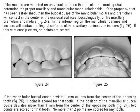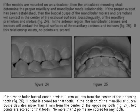If the mandibular buccal cusps deviate one millimeter or less from the center of the opposing tooth, one point is scored for that tooth. If the position of the mandibular buccal cusps deviate more than one millimeter from the center of the opposing tooth, two points are scored for that tooth.